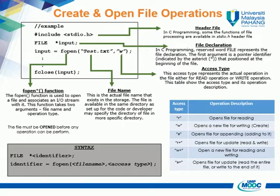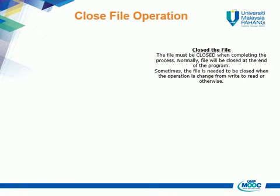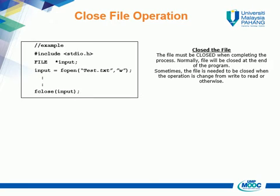This sub-chapter is about the close file operation. The file must be closed when completing the process. Normally, a file will be closed at the end of the program. Sometimes, the file needs to be closed when the operation is changed from write to read or otherwise. We use a similar example as the previous sub-chapter.